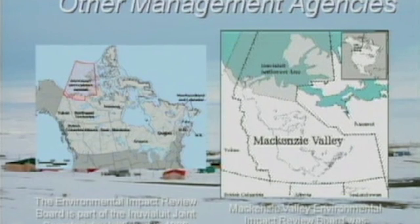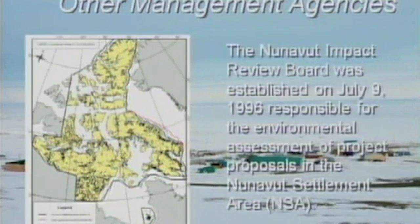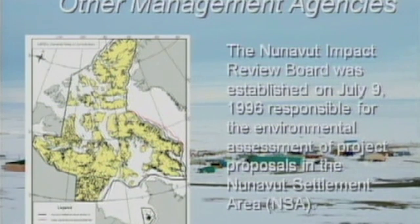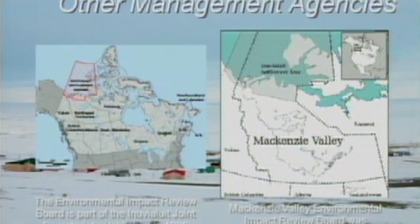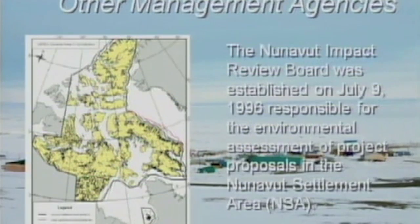In the north, we also have other management agencies — three major ones. There's a northern settlement area over by the Beaufort Sea, the Mackenzie Valley Review Authority south of that, and the Nunavut Impact Review Board to the east. The first was established in 1986, the Mackenzie Valley Review Board in 1998, and the Nunavut Impact Review Board in 1996. These are all relatively new review boards with authority vested by the minister responsible for the north, but generally independent.